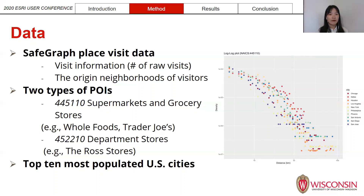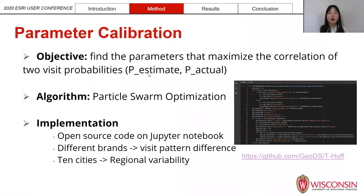On the right hand side, we have a log-log plot for the visiting distances, which shows the famous distance decay phenomenon — the probability of traveling decreases as distance increases. The different colors represent data for different cities. Before we use the actual model to make predictions, we need to do parameter calibration in order to find the best alpha and beta that fit the situation of the study area.